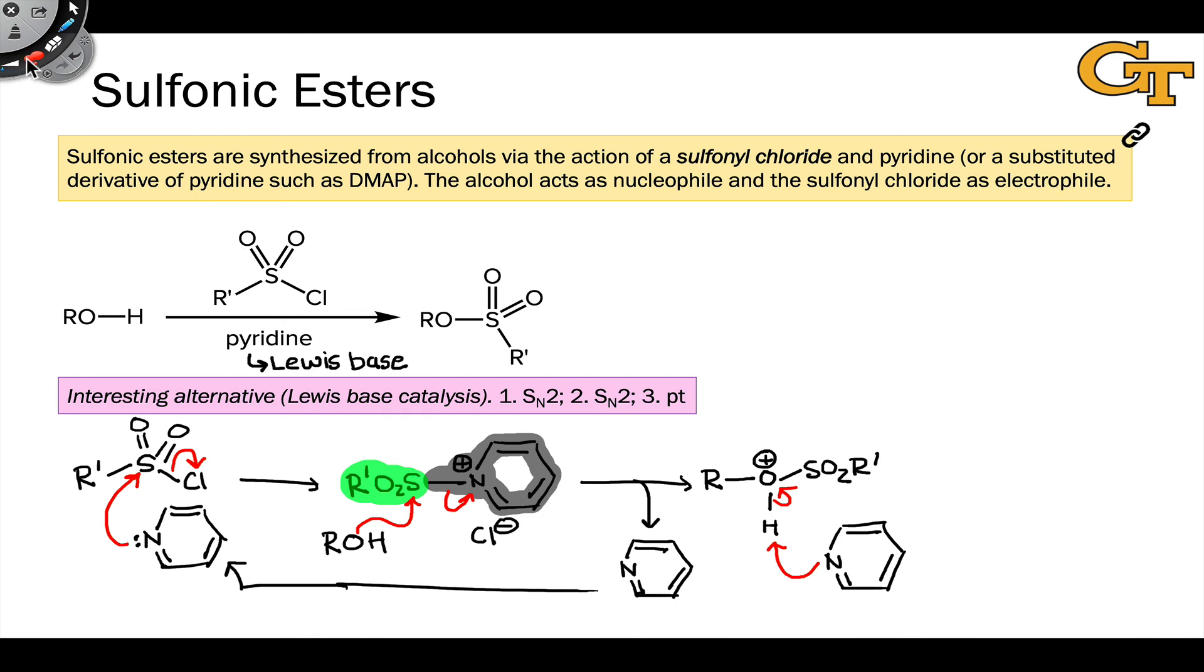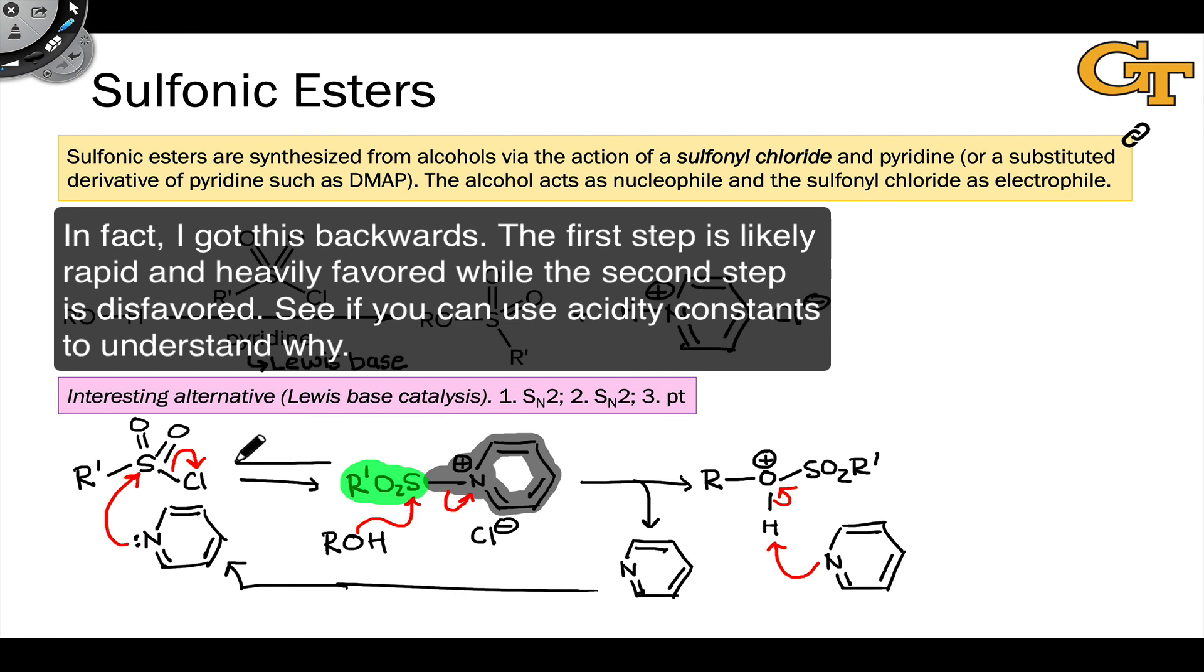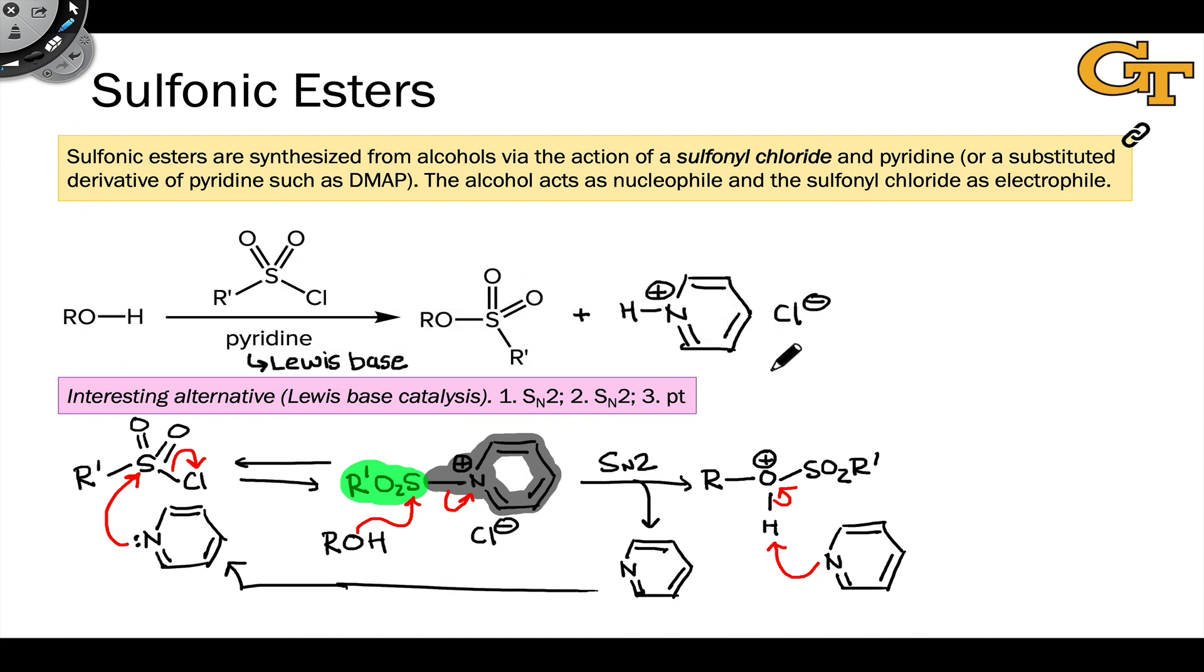It's just, this is an interesting mechanistic alternative in that it highlights really Lewis base catalysis, catalysis by a Lewis base, in which we're setting up a good leaving group. We're setting up a better leaving group. This step is probably reversible. It may not even be favored, but once that good leaving group is on there, SN2 attack in the next step is very rapid. And so catalysis occurs. Overall though, whatever the mechanism is, the overall process involves nucleophilic substitution at sulfur, where the leaving group is either chloride, or as we saw in the last slide, in the sulfonic anhydrides, a sulfonate anion itself. And the nucleophile is the alcohol, which is eventually deprotonated by the base under the reaction conditions.